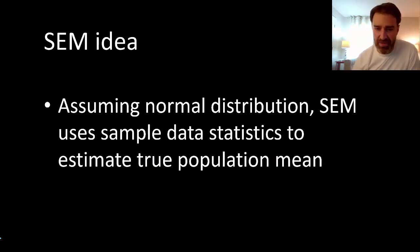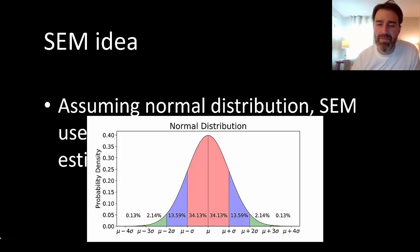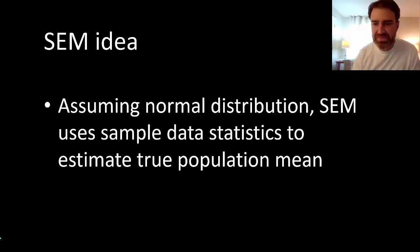The idea of standard error of the mean is that if we can assume a normal distribution of the data, a normal distribution is basically like a bell curve. For the most part in this course many of the things that we're going to measure in lab might assume a kind of bell curve distribution of possibilities for the results. So assuming that normal distribution, SEM is going to use statistics from the sample data set that we collect to try and estimate what's called the true population mean.